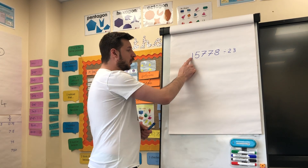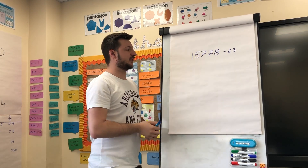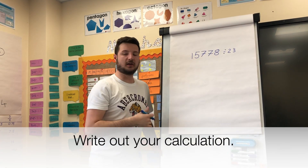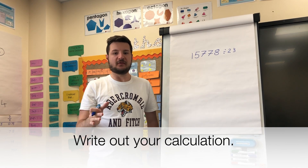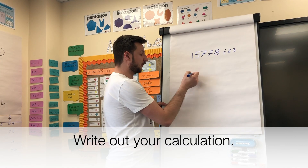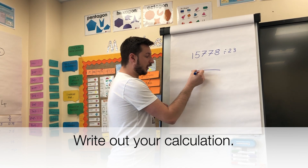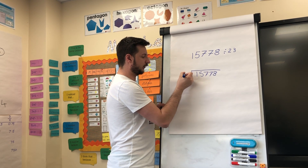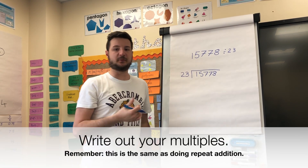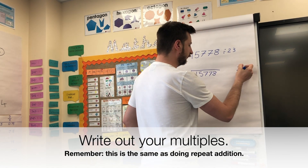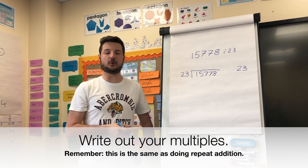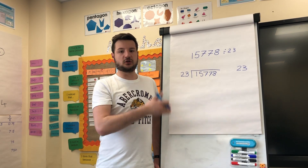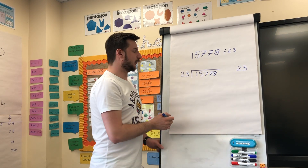Here's another example for us to go through: fifteen thousand seven hundred and seventy-eight divided by twenty-three. Now like before, there are two things we need to do before we get on to our steps to success. Write out the problem — our dividend goes on the inside, our divisor on the outside. And then we need to write out our multiples. If you struggle with your twenty-three times table, use repeated addition somewhere else on your page.